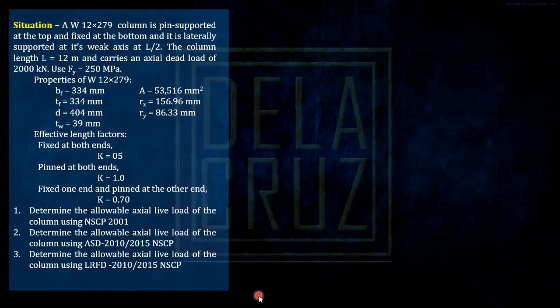Situation: A wide flange W12 by 279 column is pin-supported at the top and fixed at the bottom and is laterally supported at its weak axis at half of the column length. The column length is 12 meters and carries an actual dead load of 2000 kilonewtons. FY and the geometric properties are given, and also the effective length factors. The questions are: determine the allowable actual live load of the column using NSCP 2001, and the same question using ASD on NSCP 2015/2010, and using LRFD 2015/2010 NSCP.